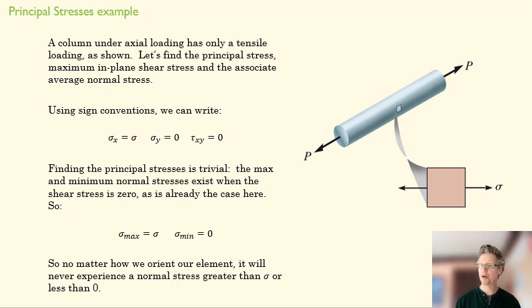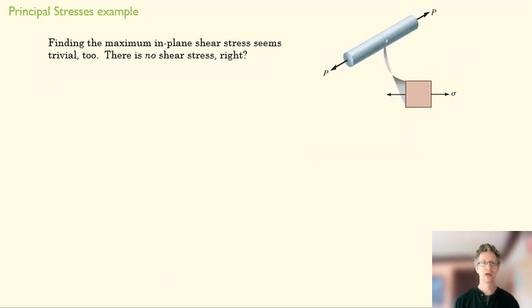Okay, so that's pretty straightforward. Now we know our principal axes, right? They're going to be along the axis and up and down here. We know our maximum normal stress, our minimum normal stress. Now we want to turn to our shear stress. And it seems like that should be pretty trivial too, right? We don't have any shear stress. But that's where things get tricky.